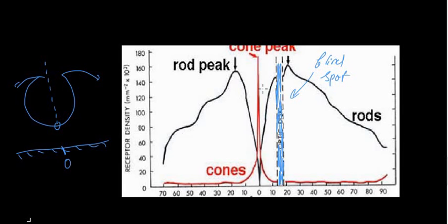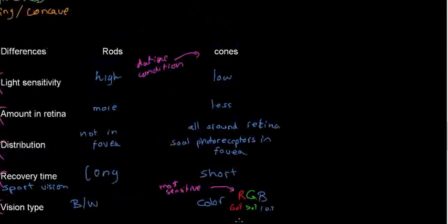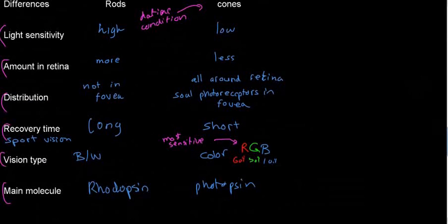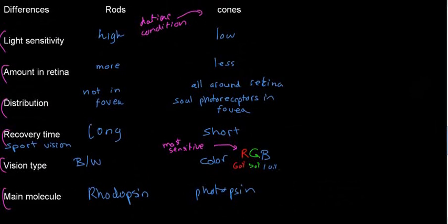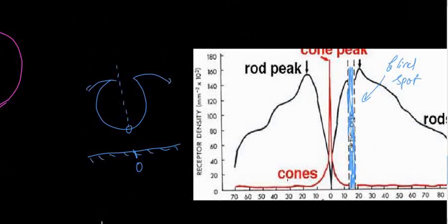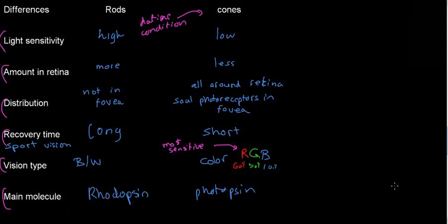Hopefully you've understood the relationships in this table. If you understand this, you can tackle quite a few exam questions. All you need to understand is the idea of the fovea and how it relates to the distribution of rods and cones. In the next video, we're going to discuss the mechanism.